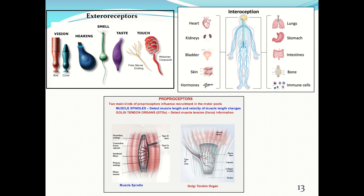Here are illustrations of those different receptor types. For exteroceptors you can see vision with rods and cones, hearing, smell, taste, and touch including the free nerve endings and Meissner's corpuscles. With interoception, it's reminding you that it monitors the organs, blood vessels, etc. For proprioceptors we see muscle spindle fibers and Golgi tendon organs. Muscle spindles detect muscle length and the velocity of muscle length changes, while Golgi tendon organs detect muscle tension and force.